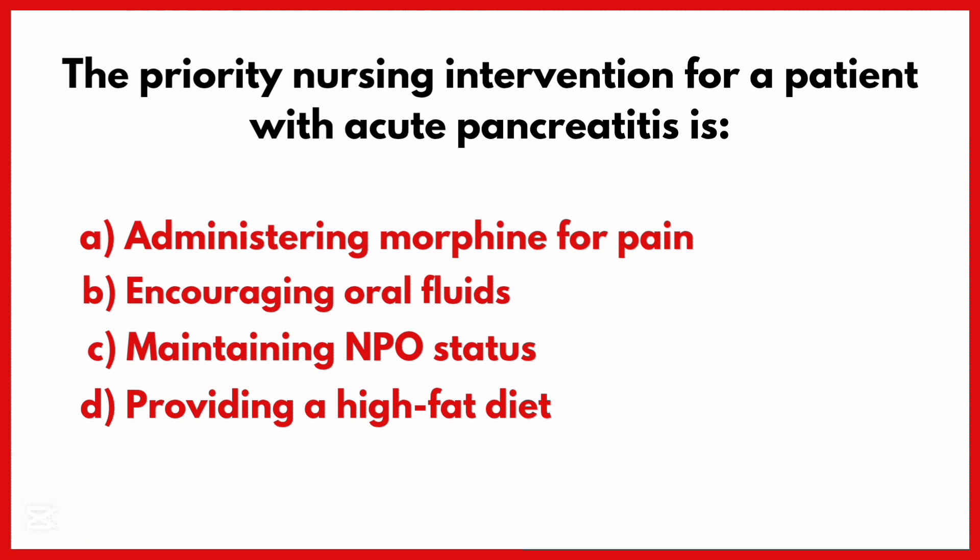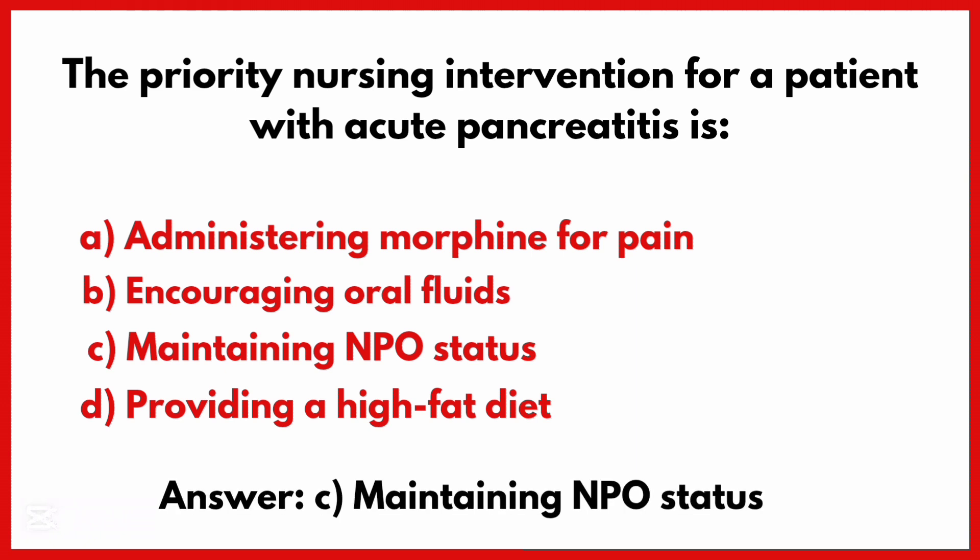The priority nursing intervention for a patient with acute pancreatitis is — the correct answer is option C: Maintaining NPO status.